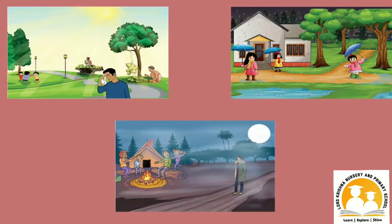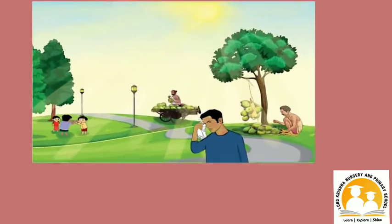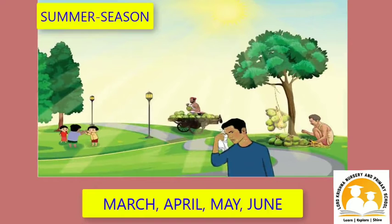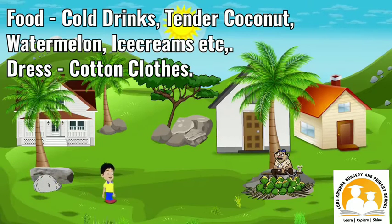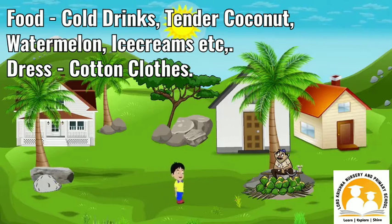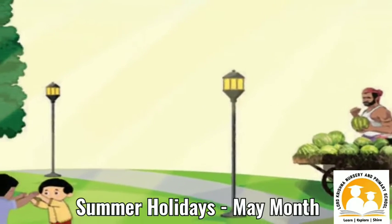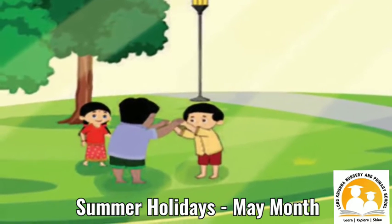Summer, rainy and winter season. Summer, kodai kalam. March, April, May and June are the months of summer. Summer is very hot and so we get a lot of sweat. To balance that, we drink lots of water, juices and tender coconut. We love eating ice creams and watermelon during summer to keep ourselves cool. We wear cotton dresses during summer. Summer holidays come during the month of May.